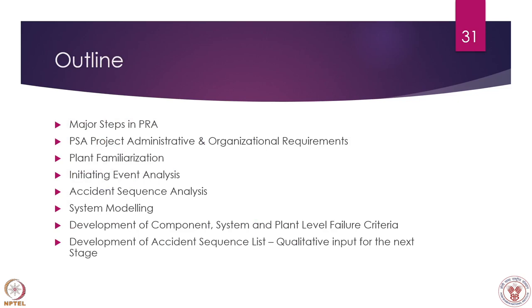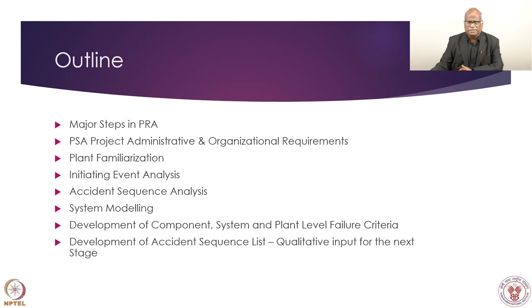The outline is we will discuss major steps involved in PSA - half will be here and half in the next lecture, since here we are discussing only qualitative modeling and quantification will come in the next lecture. The steps include PRA project administrative management, plant familiarization, initiating event selection, grouping of initiating event, system modeling, development of component and plant failure criteria, accident sequence list, and qualitative input for the next stage - quantification.